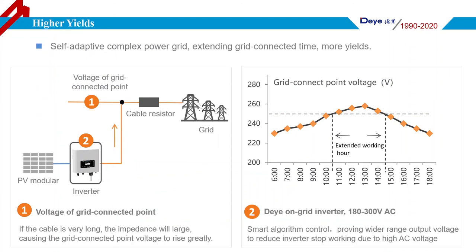If the power distribution cable is very long, the cable impedance will increase, causing the grid connection point voltage to rise greatly. For example, in rural areas of India and Pakistan where the grid is very unstable, inverters need a wide range of output voltage to handle these conditions.